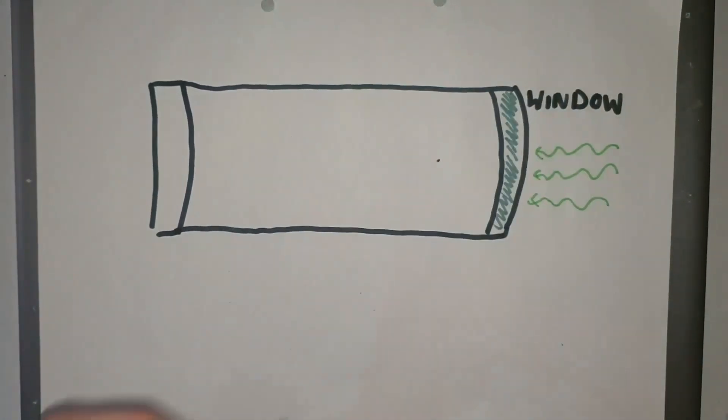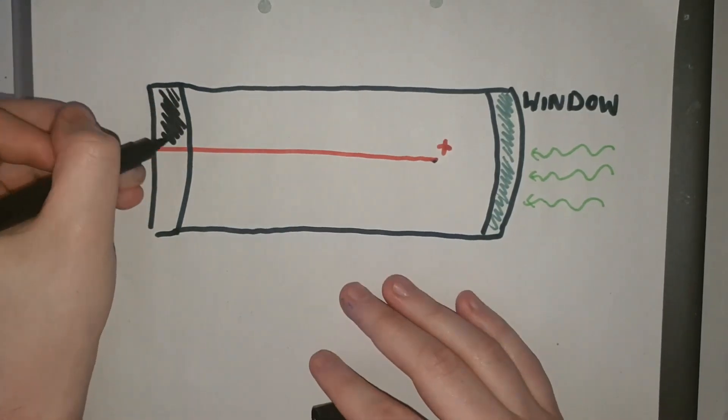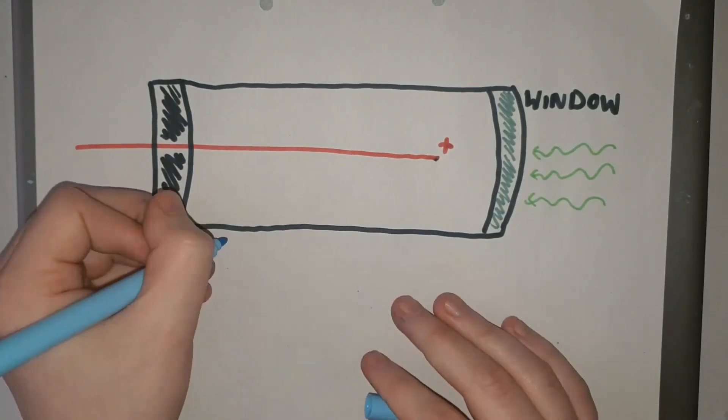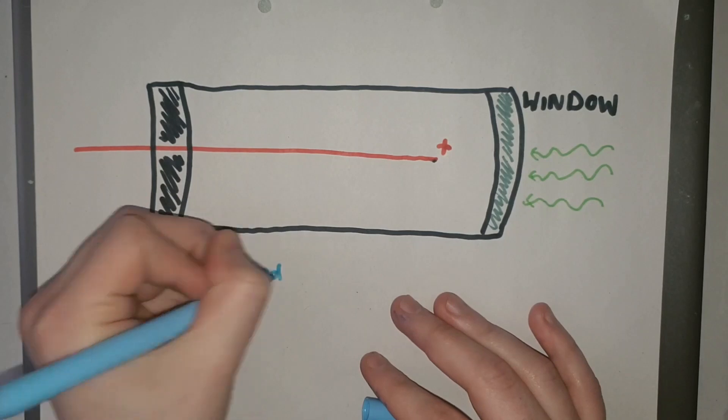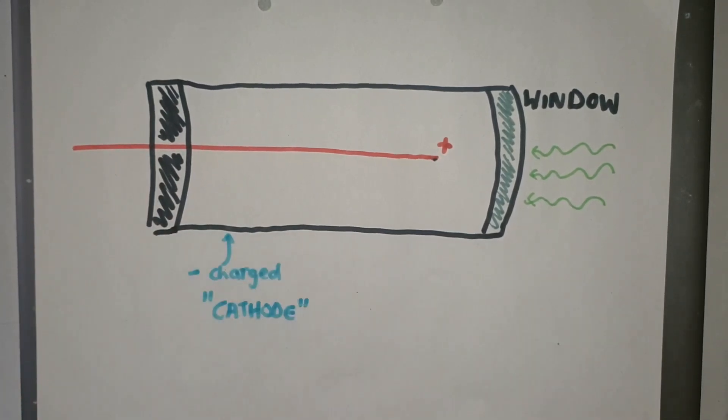There is a metal rod in the middle of the tube which is positively charged and we call this the anode. The metal casing is negatively charged and we call this the cathode.